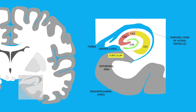The subiculum is the most inferior part of the hippocampus and its main output, with projections to the entorhinal cortex, nucleus accumbens, amygdala, and other brain regions. The dentate gyrus is believed to contribute to the formation of new episodic memories and is noted for high rates of adult neurogenesis.